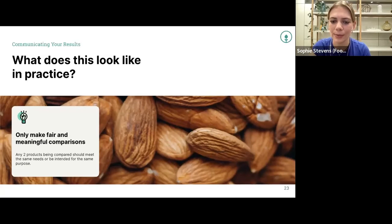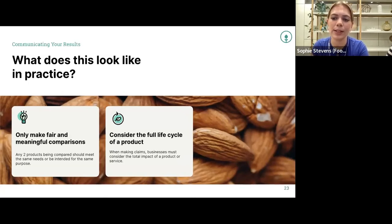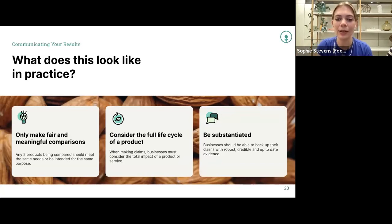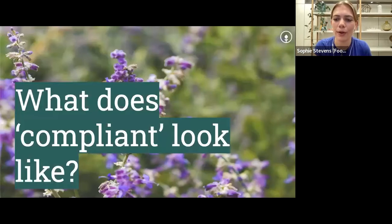The fifth principle is to consider the full life cycle of a product. While it's acceptable to refer to a specific aspect of your product and supply chain, businesses should focus on the aspects that are most significant in terms of overall impact, to avoid misleading customers — and importantly acknowledge where exclusions have been made. Finally and very importantly, the sixth principle: green claims should always be substantiated. In order for environmental claims to be verified as truthful and accurate, businesses must provide supporting evidence. Assessment providers like us will always help ensure the data used by our clients is robust and up-to-date, and that our methodology is made publicly accessible. I'll now pass back to Rose to talk about what compliance could look like for you.